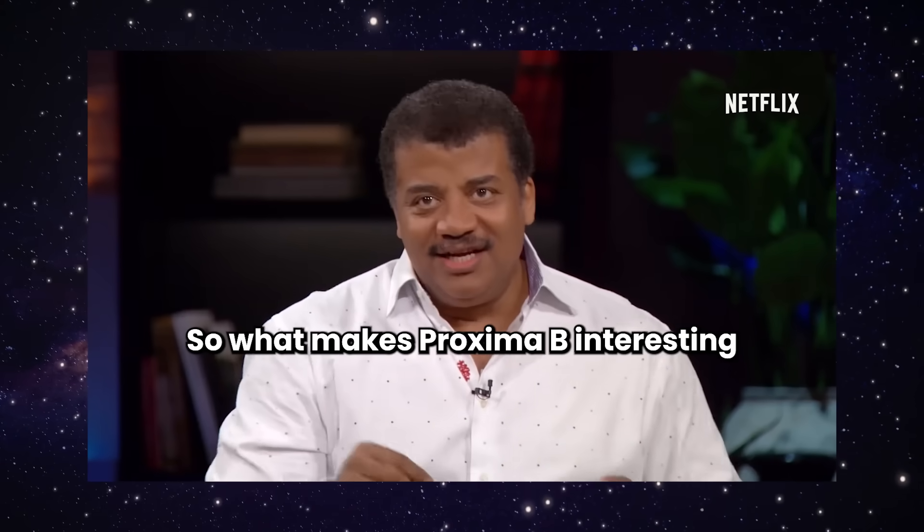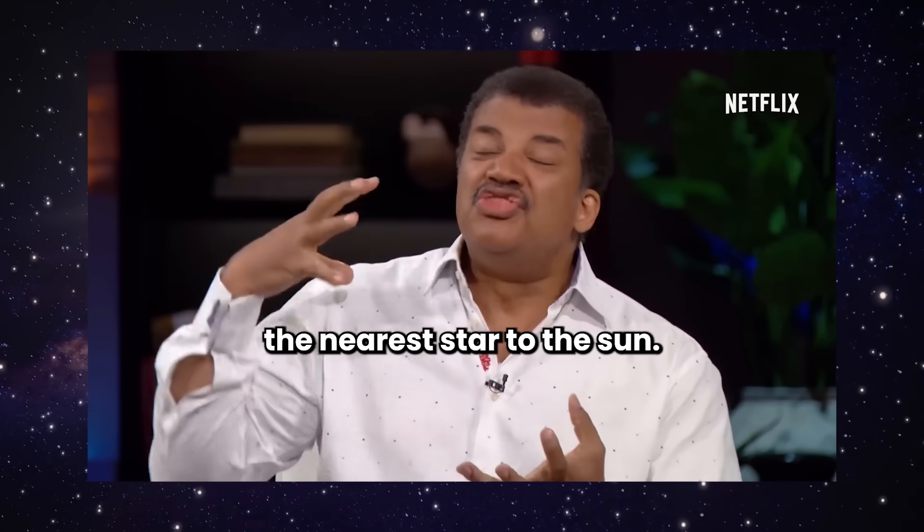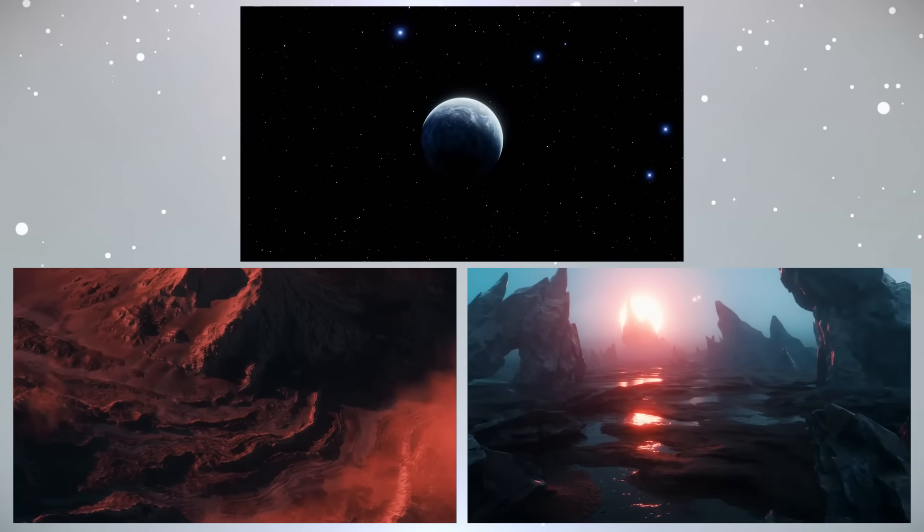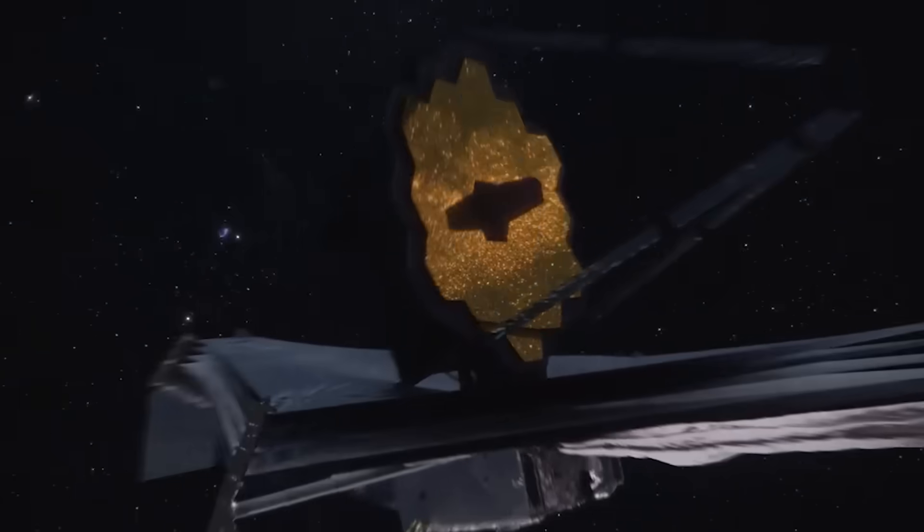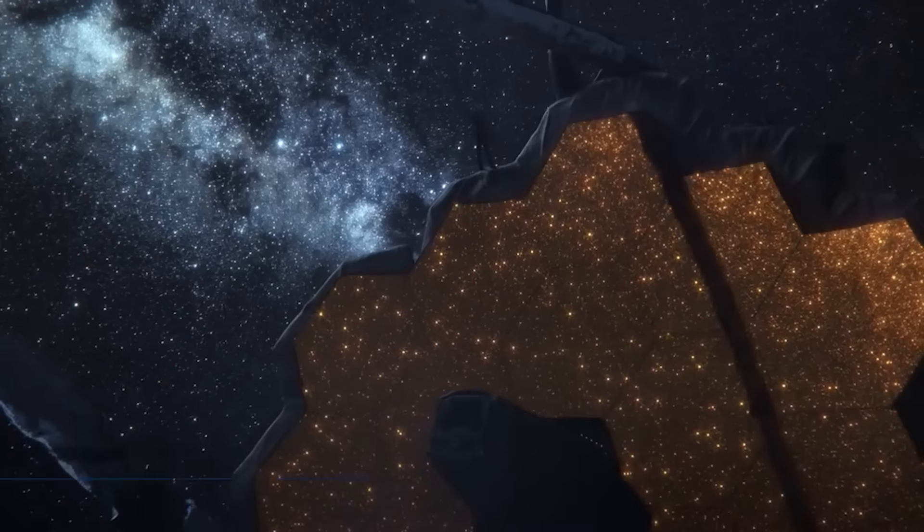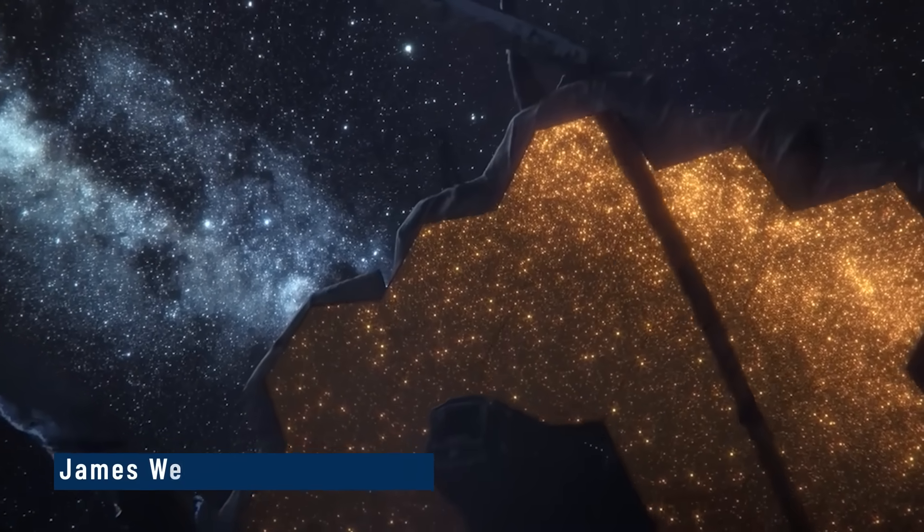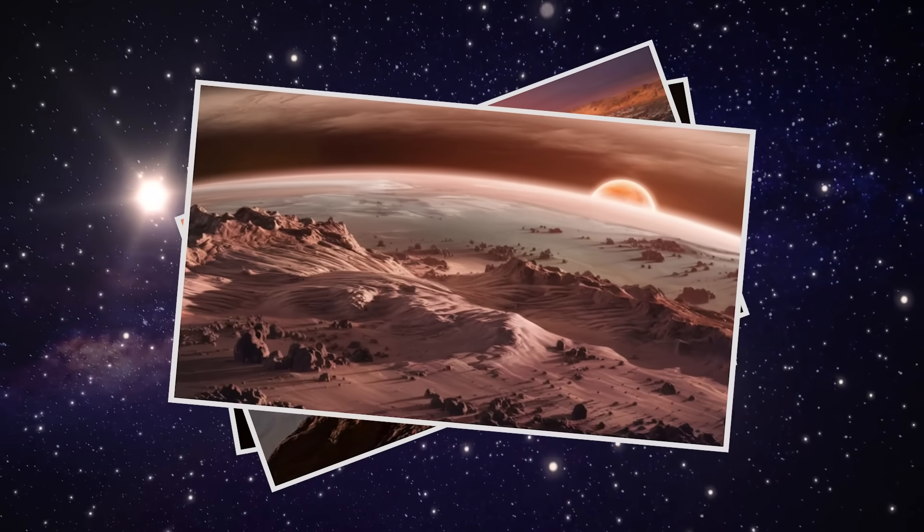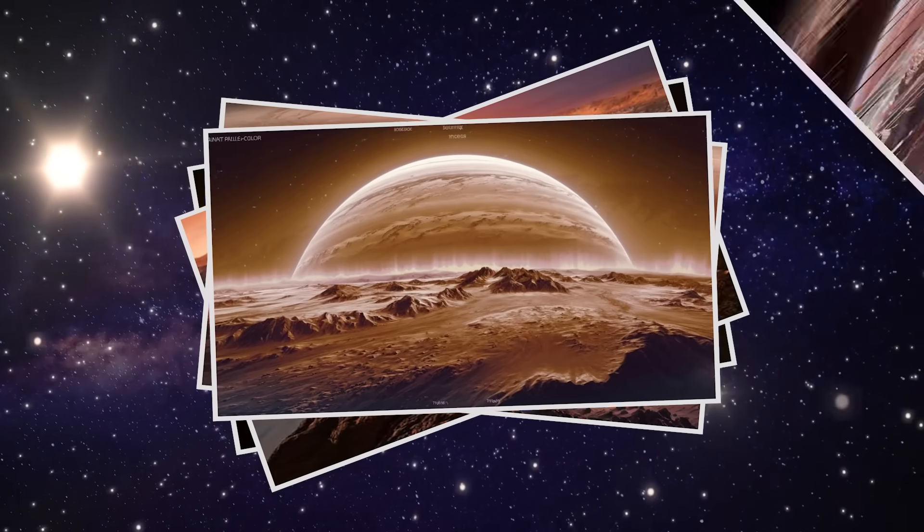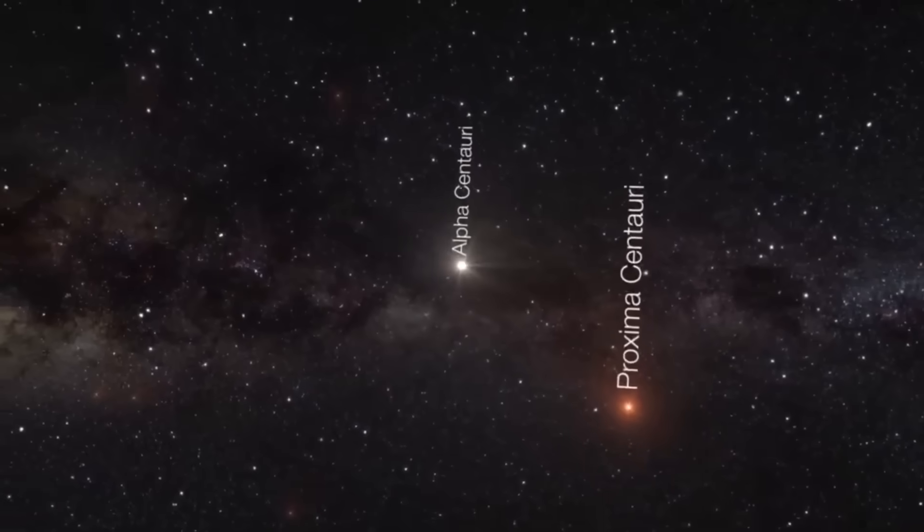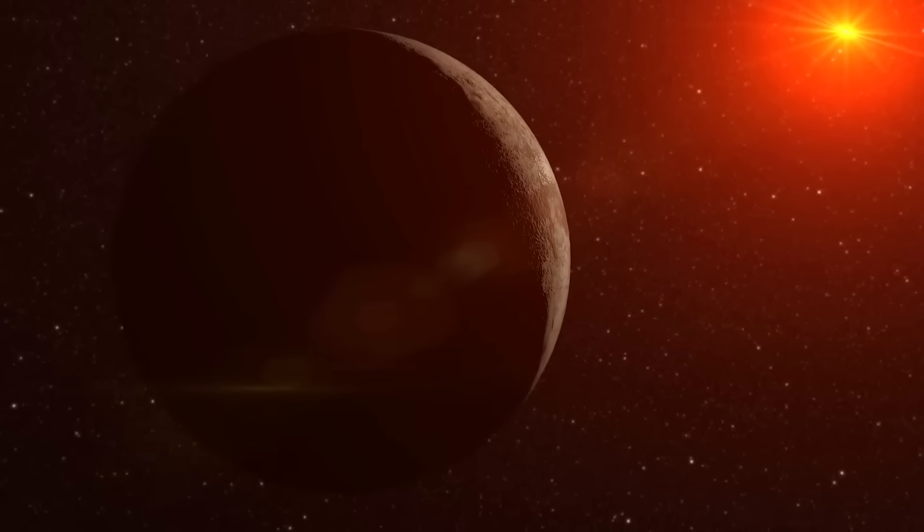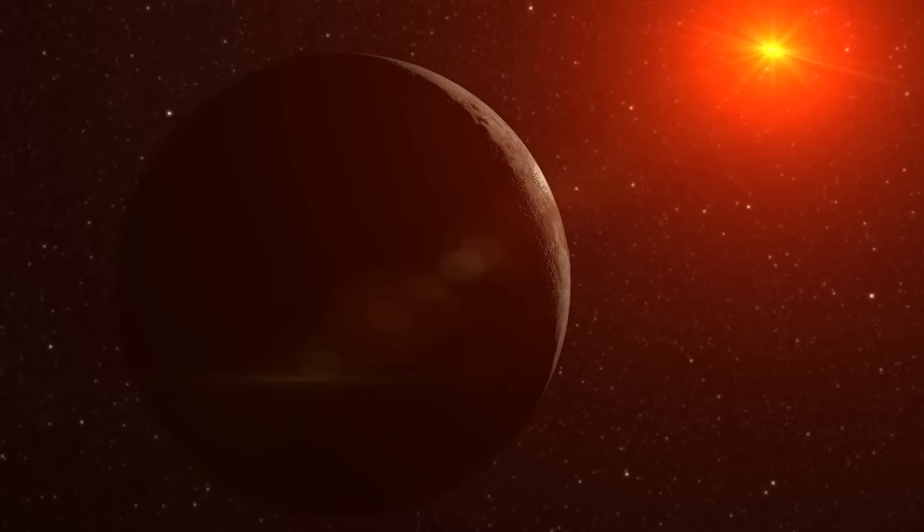What makes Proxima b interesting is that it's an Earth-like planet orbiting the nearest star to the Sun. For the first time in human history, we are not just imagining what another Earth might look like, we're seeing it. Just 4.2 light-years away, Proxima b has long been one of the most talked-about exoplanets.